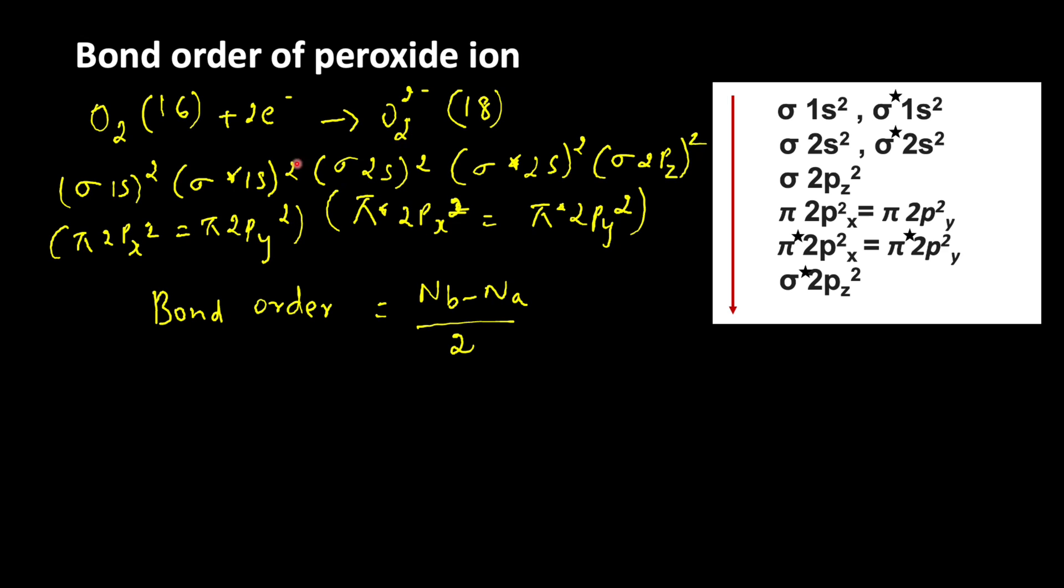For antibonding electrons: sigma star 1s2 is 2, sigma star 2s2, 2 plus 2 is 4, then pi star 2px2 is 6, then pi star 2py2 is 8. So 8 electrons present in antibonding molecular orbitals.